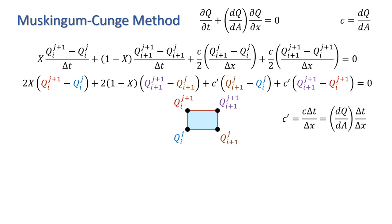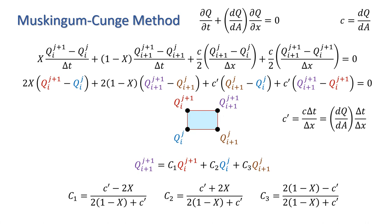Then rearrange giving an expression of the form q_(i+1)^(j+1), which will be our unknown value, equal to c1·q_i^(j+1) plus c2·q_i^j plus c3·q_(i+1)^j. Where c1, c2, and c3 are defined below.